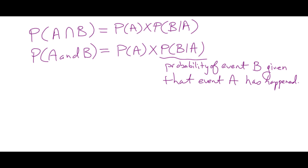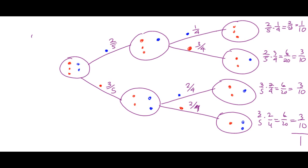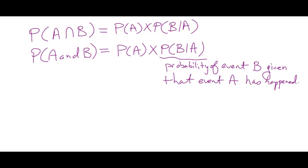Using the formula: the probability of red then blue is the probability of red times the probability of getting blue given that red had been drawn. Probability of red is three-fifths, and there are two blues out of four remaining, so the probability of red then blue is three-fifths times two-fourths, which is three out of ten.